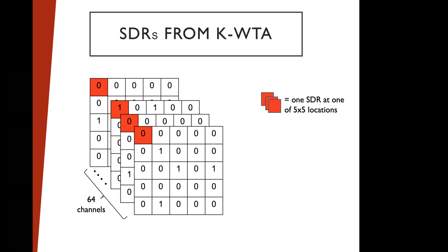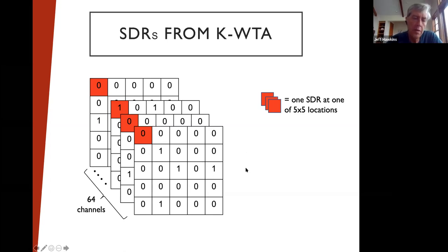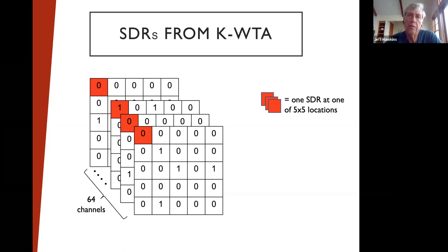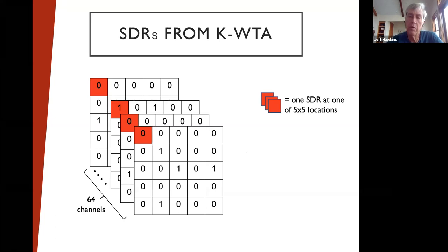There's an assumption that these SDRs will have useful information about the inputs after training. A question was raised: at this point, all you have is location on the image, not a proper location on an object — not yet a reference frame. How do you get to where you're talking about reference frames and locations on reference frames?